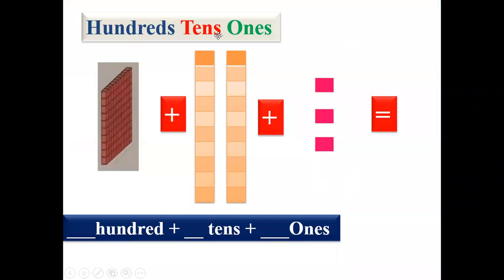On our screen we can see it is written hundreds, tens and ones. This block represents hundreds. Column number one is of ten, column number two is of ten — so these are two tens. And these three different blocks are representing units, that is ones.